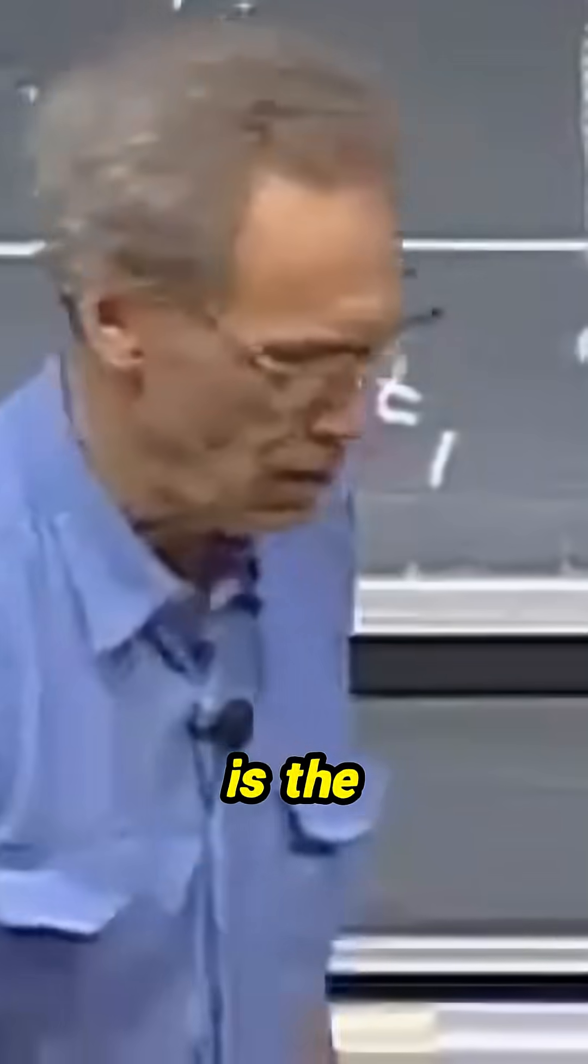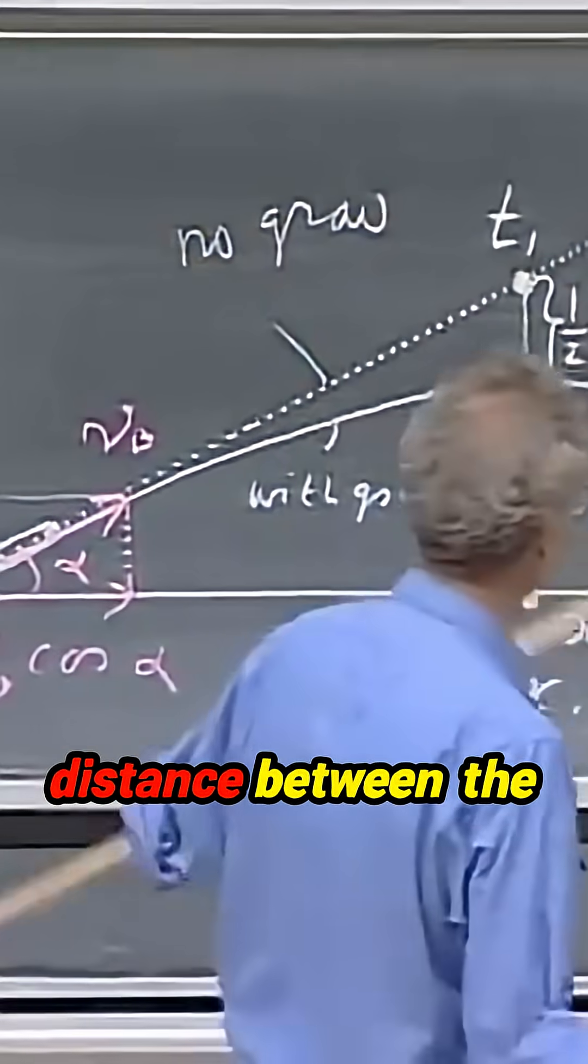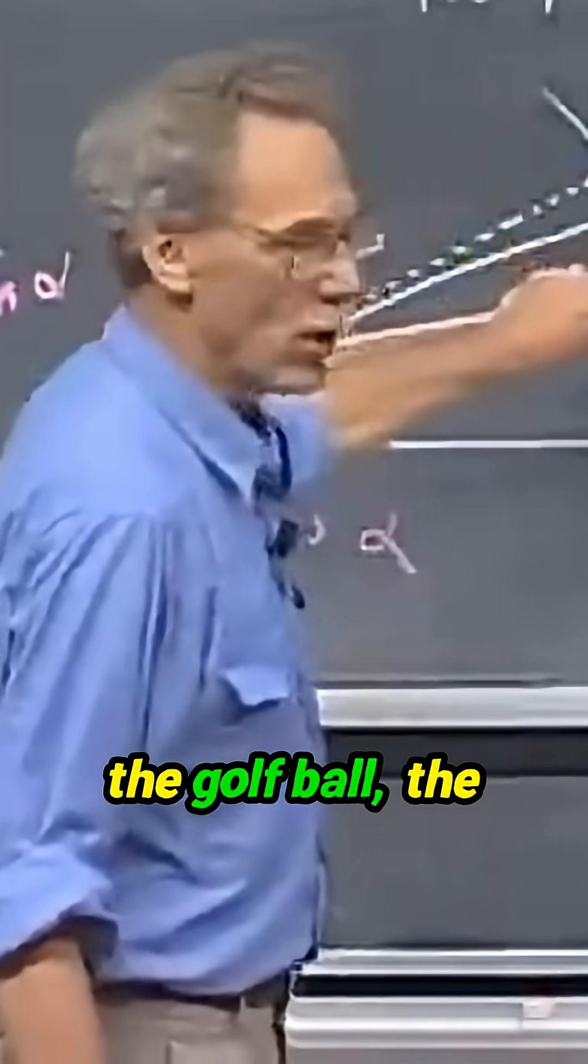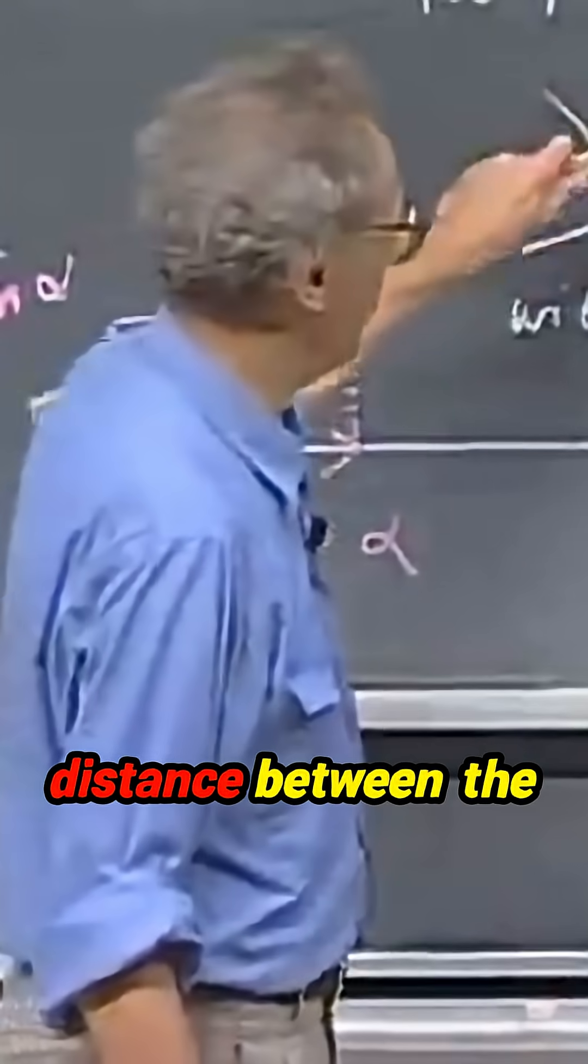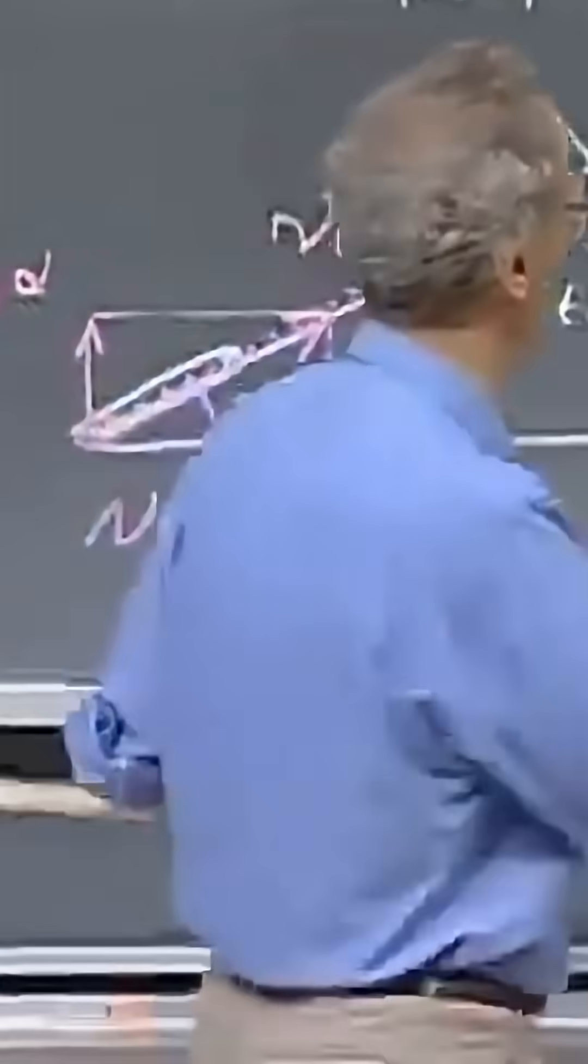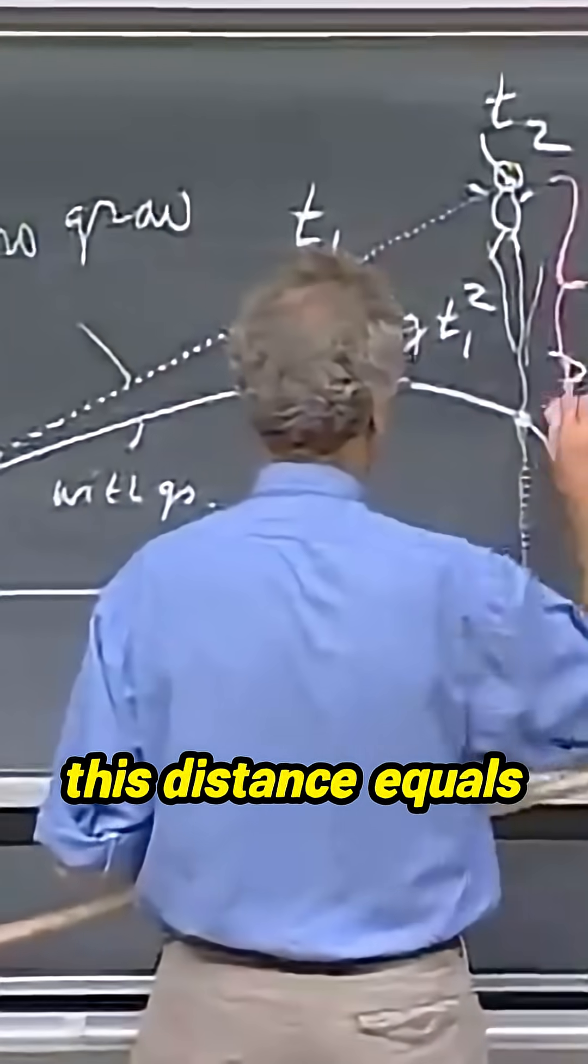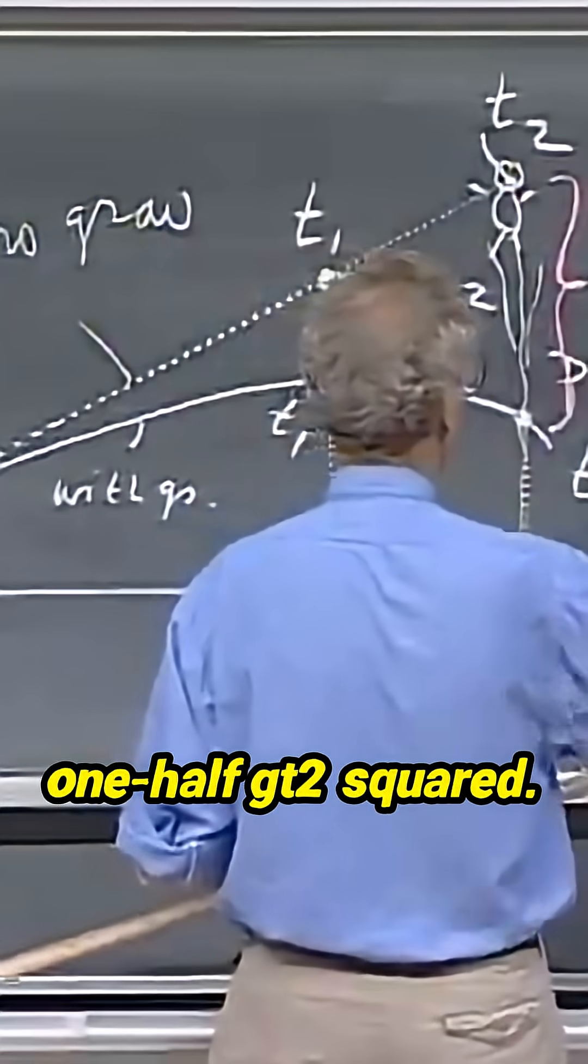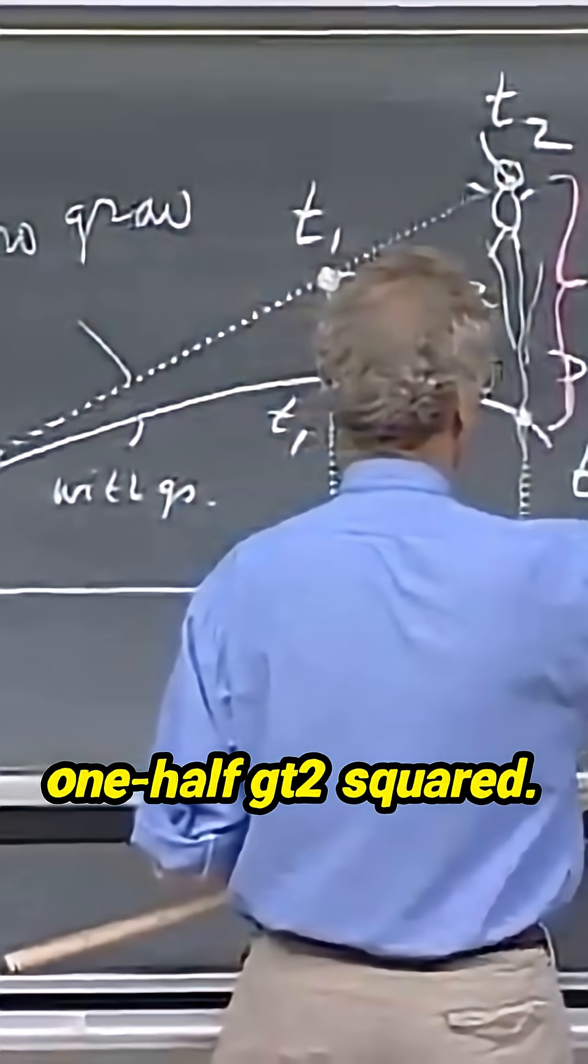So what now is the distance between the monkey and the golf ball, the distance between the two trajectories, one trajectory, no gravity, the other with gravity, this distance equals one-half gt2 squared.